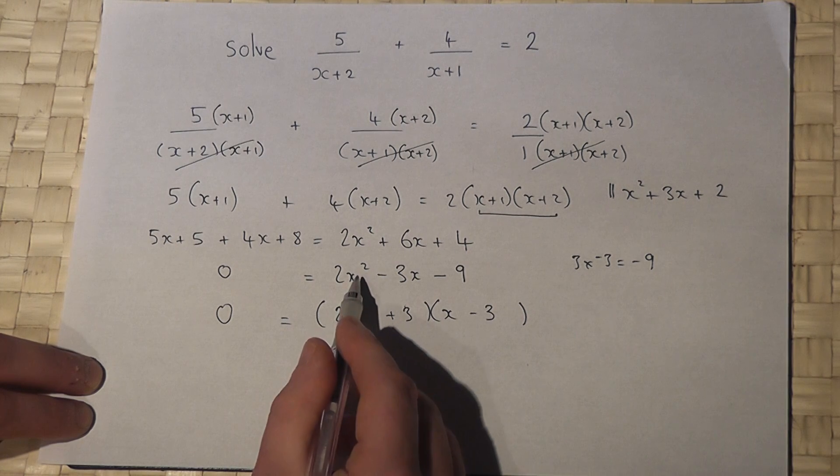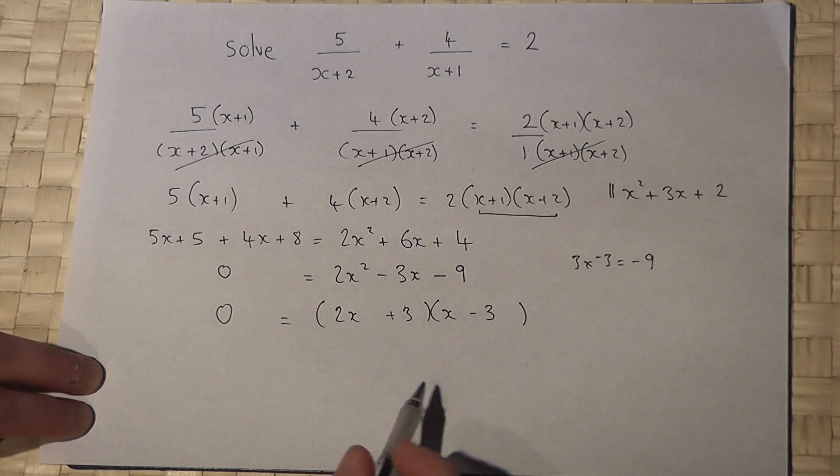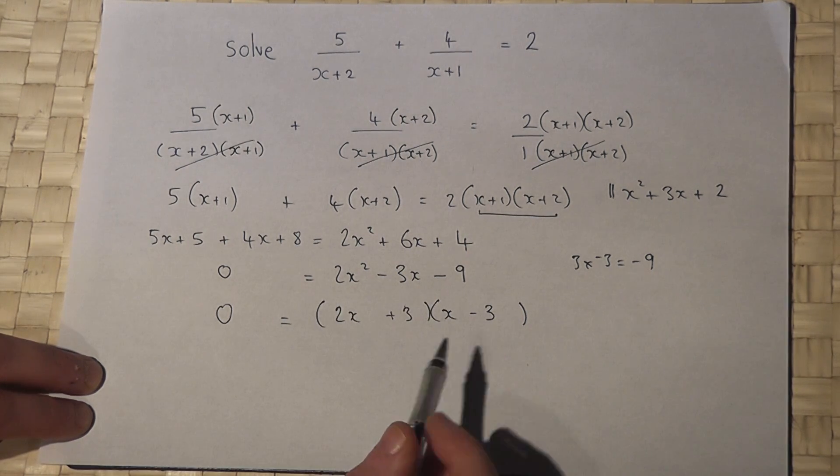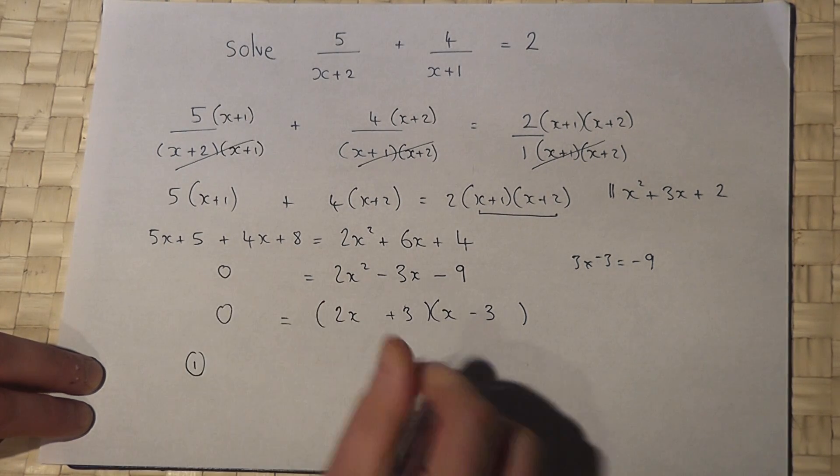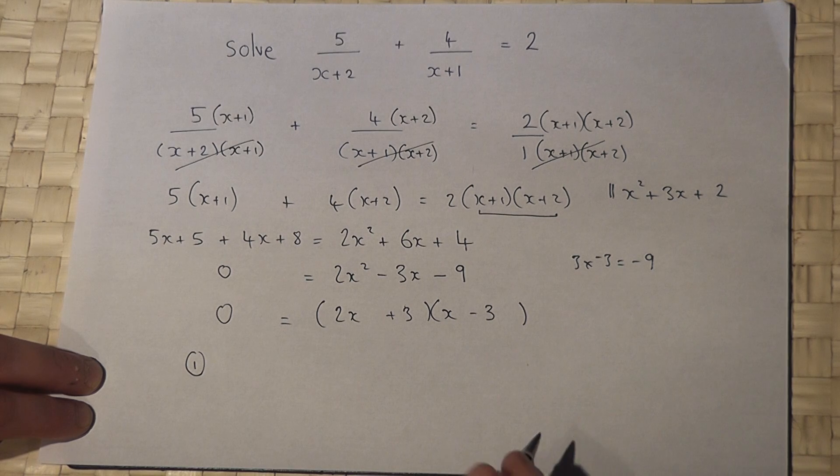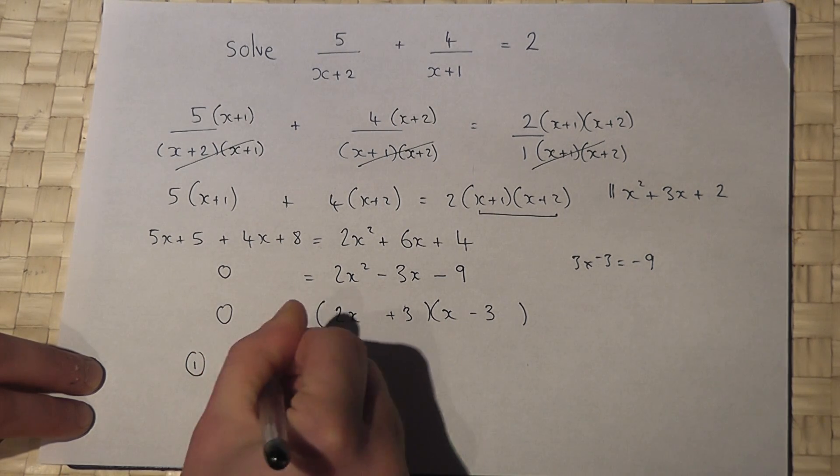So therefore, I have factorised the expression above. So, to get the solutions, I need to solve where these two brackets equal 0. Well, option 1 is quite obvious. x minus 3 equals 0, where x equals plus 3.